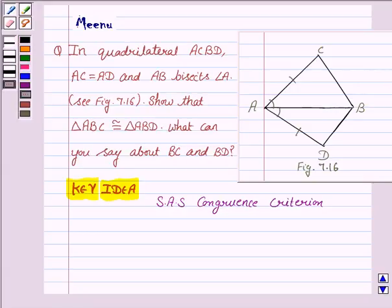Now, SAS congruence criteria means two sides and included angle of one triangle is equal to the two sides and one included angle of the other triangle. So let's move on to the solution now.